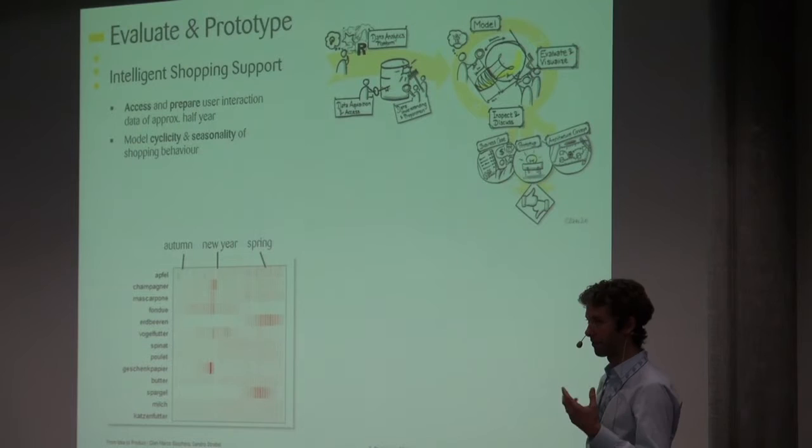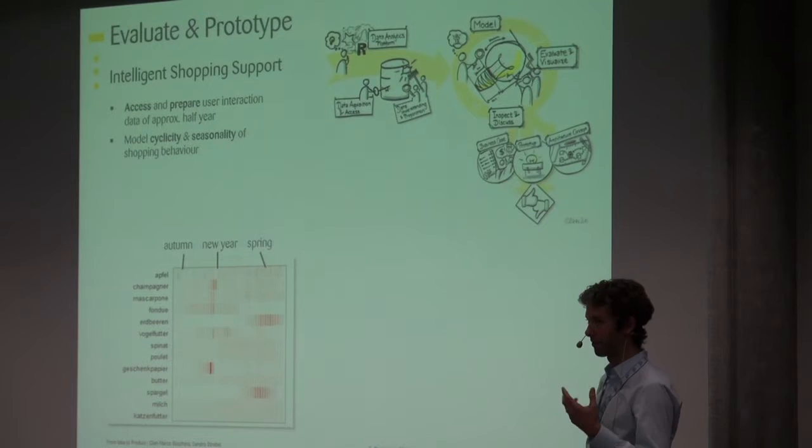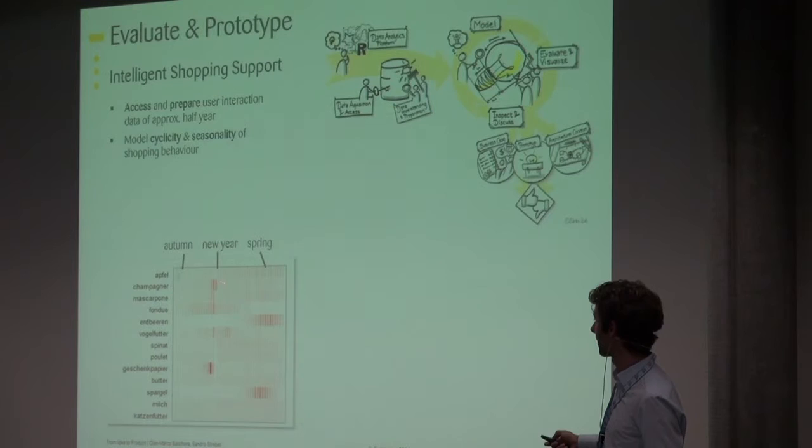And we can see the red shows where they have put it on the list more frequent than at other times. So for example, you can see fondue, that's very before Christmas. Champagne goes up to New Year's Eve. Gift wrapping paper, it's really close to Christmas. On the other hand, strawberries, it's much more spring, and there's nothing in winter, asparagus as well.